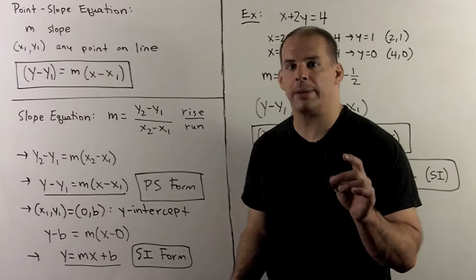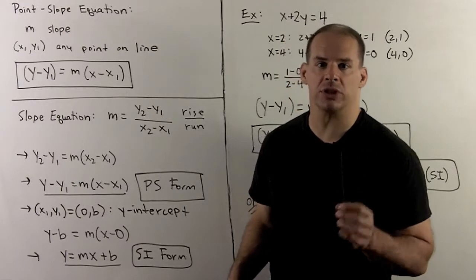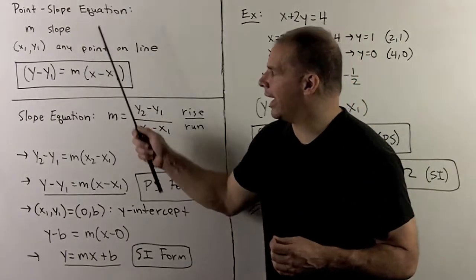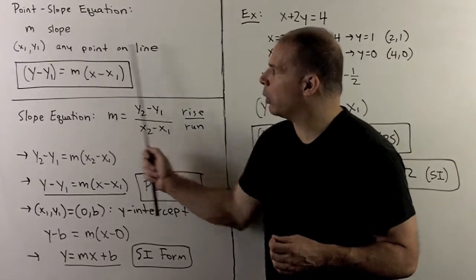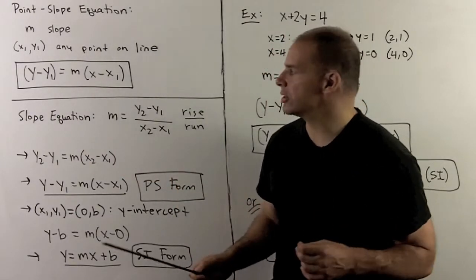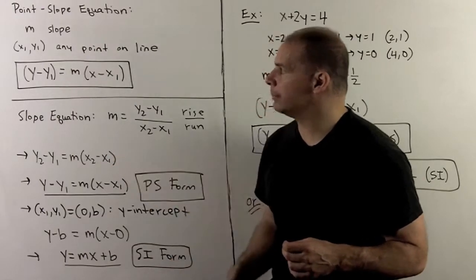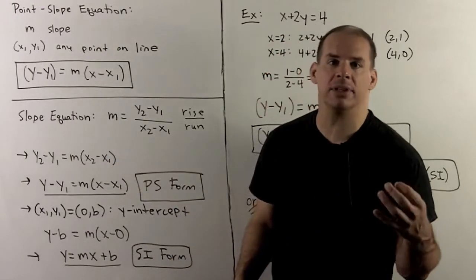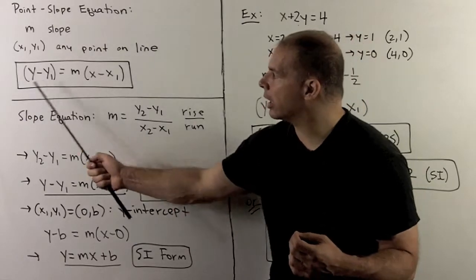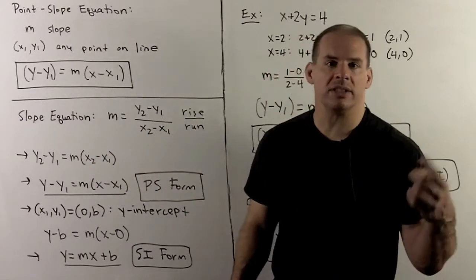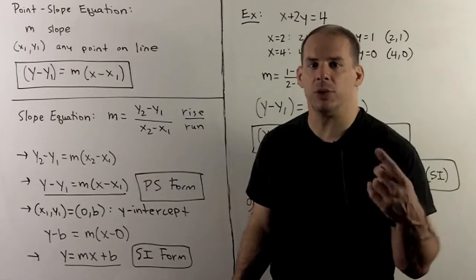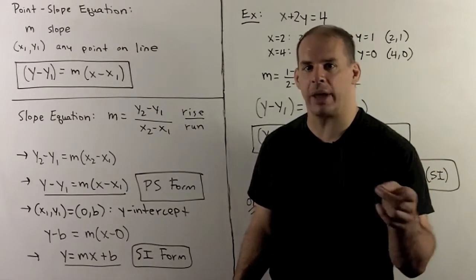For our final type of equation of a line, we have the point-slope equation. We can use this when we're given the slope and any point on the line, say x1, y1. Then our equation is of the form y minus y1 is equal to m times the quantity x minus x1. Note that we're one step away from slope-intercept form — all we need to do is isolate the y and then expand.